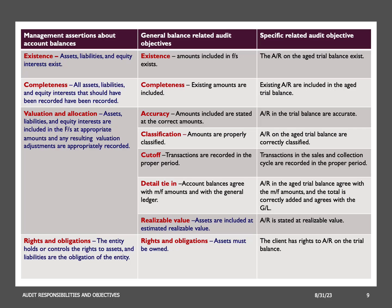Rights and obligations focuses on whether the company actually has the legal rights to its assets and the valid obligations for its liabilities as of the reporting date. It asserts that the company has the right of ownership or responsibility for the items listed in the financial statements. The auditor's objective is to gather audit evidence confirming that the company possesses the legal rights to its assets and is obligated for its liabilities as reported. For example, for the accounts receivable account, this assertion involves ensuring that the company has a valid right to receive payments from its customers.